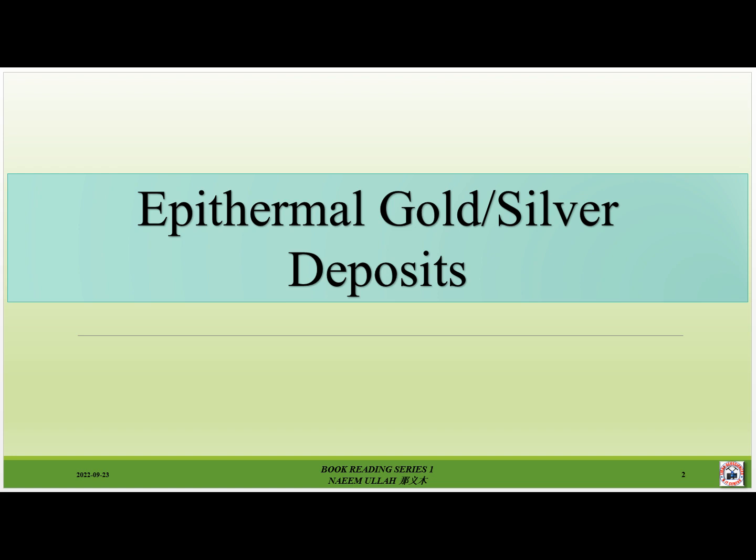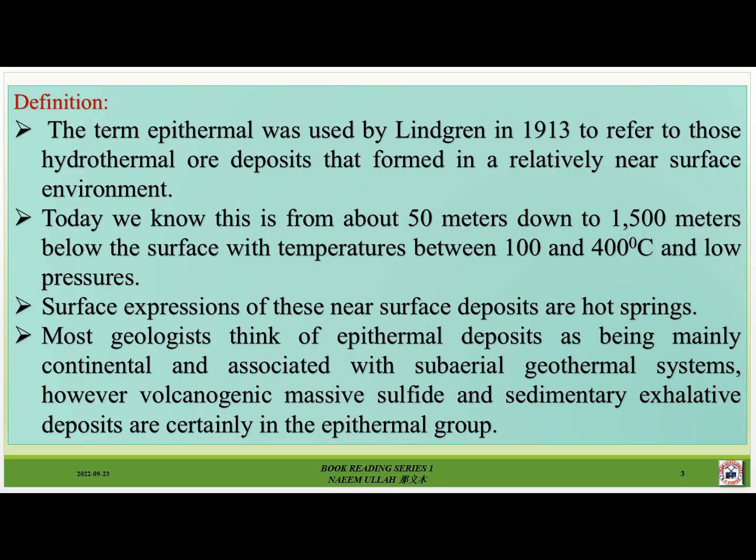Epithermal gold-silver deposits: definition. The term 'epithermal' was used by Lindgren in 1913 to refer to hydrothermal deposits formed in a relatively near-surface environment. Today we know this is from about 50 meters down to 1500 meters below the surface, at temperatures between 100 and 400 degrees centigrade and at low pressures. Surface expressions of these near-surface deposits are hot springs. Most geologists think of epithermal deposits as being mainly continental and associated with sub-aerial geothermal systems.